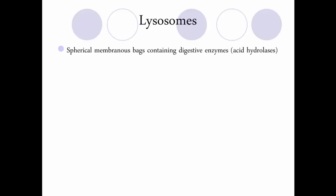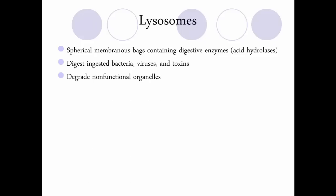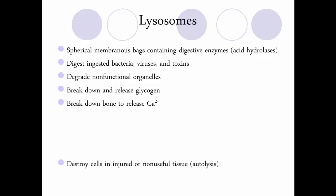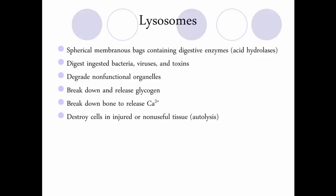Lysosomes are membranous organelles containing digestive enzymes. They digest bacteria ingested by the cell, viruses, and toxins — they're basically the trash dumpsters for the entire cell. They also break down non-functional organelles, break down and release glycogen, and help break down bone to release calcium for muscle contraction. They also destroy cells that are injured or non-useful through a process called autolysis — breaking down the cell from the inside.